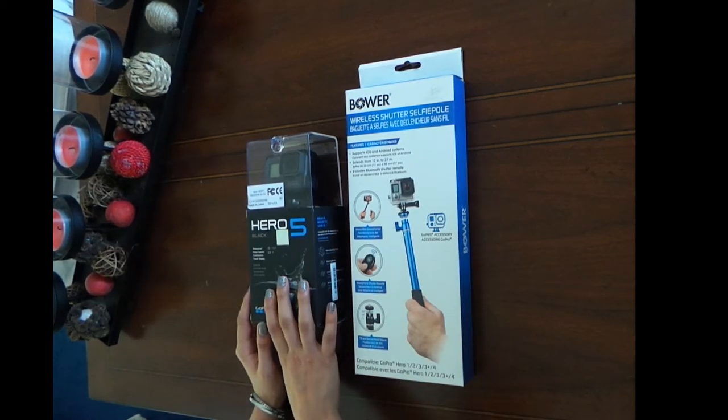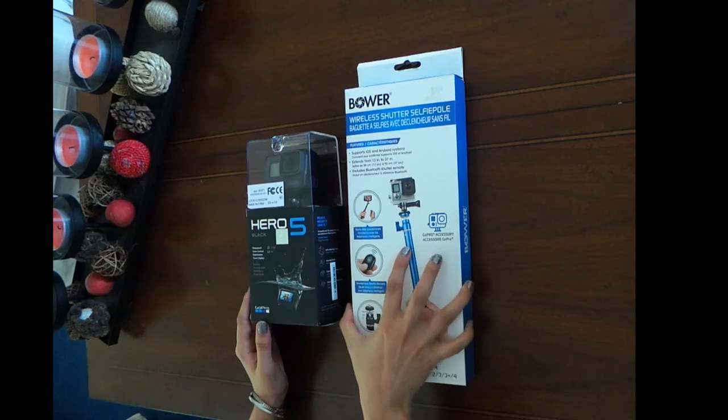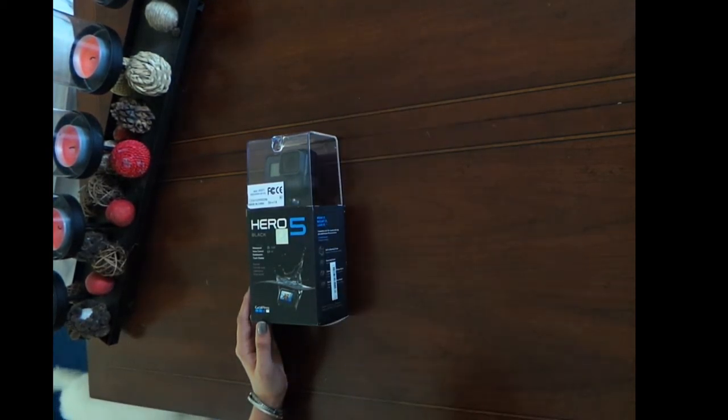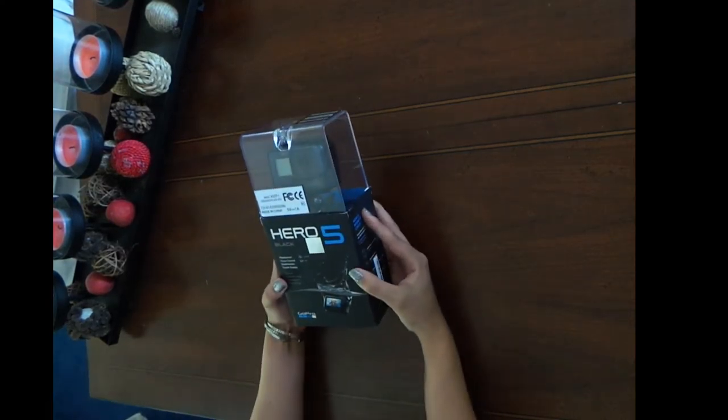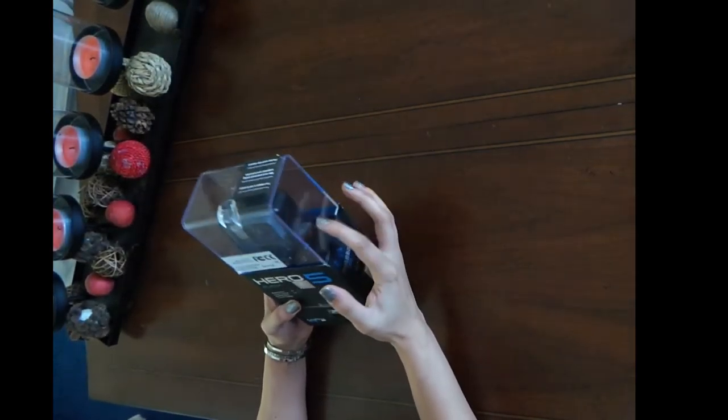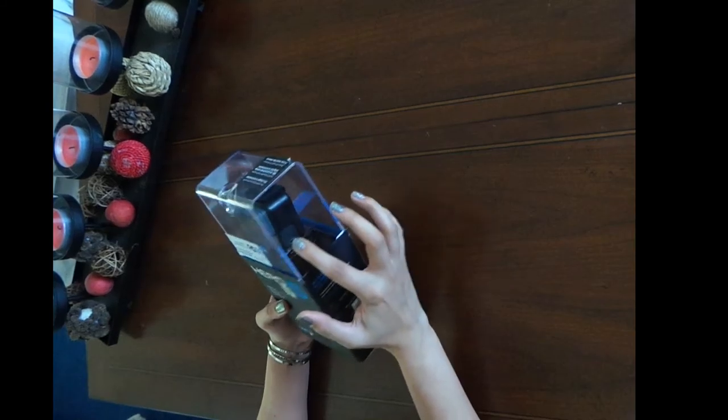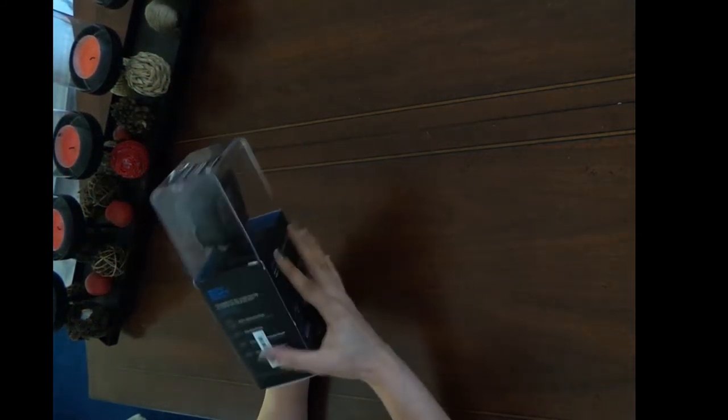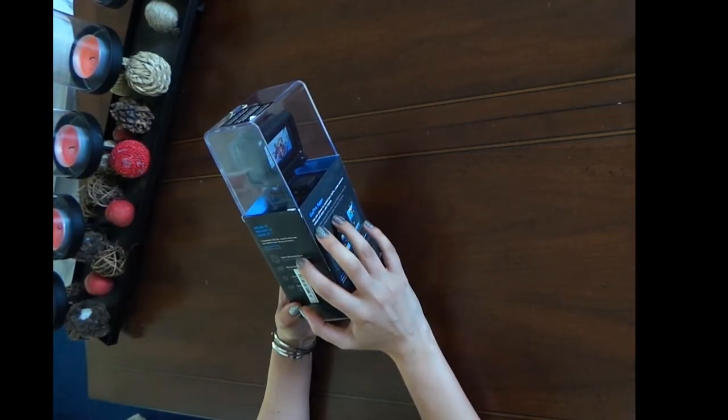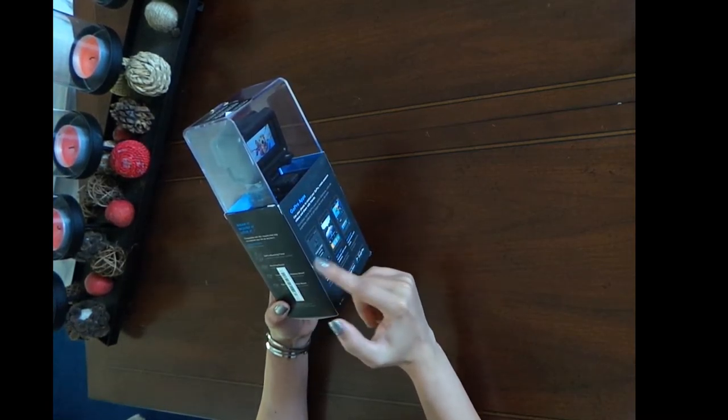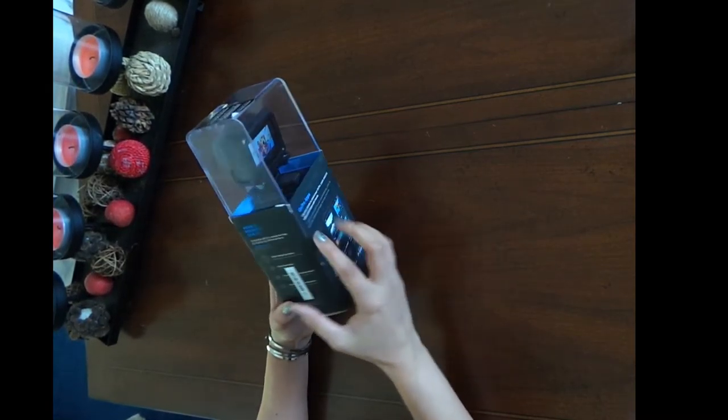We'll start off with the Hero 5 Black GoPro and then we'll have a look and see what's in this box. The Hero 5 Black comes in a really cool box. This is a plastic box up here so you can actually see the GoPro, and then within this box should be a GoPro mounting frame, mounting buckle, and then two adhesive mounts, one flat and one curved. And it also includes the manual.